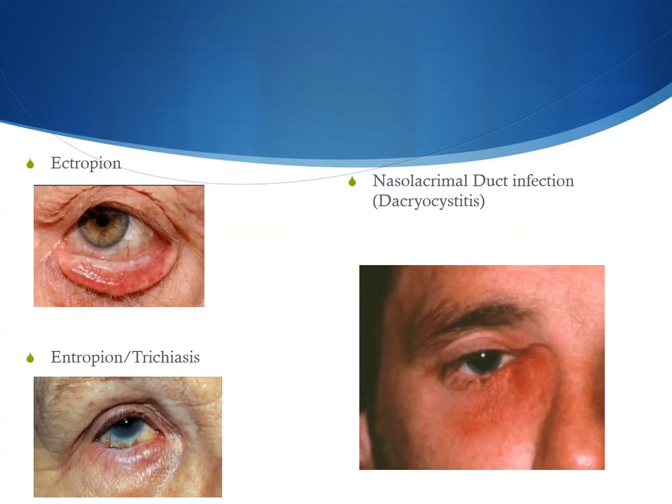To review a few other causes of red eye related to the eyelid: ectropion is an outturning of the eyelid. Entropion can lead to trichiasis, which is inturning of an eyelid with eyelash rubbing against the surface of the eye. Both of these are typically treated with lubrication but will most often need surgical management. Finally, around the eyelid is also the nasolacrimal duct, which drains tears from the eye into the nose. This can get obstructed and then infected, which is called dacryocystitis, and is typically treated with antibiotics.